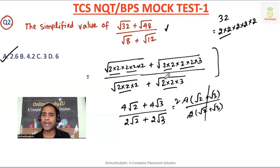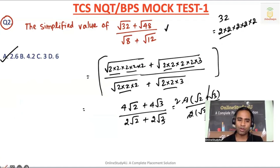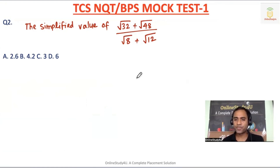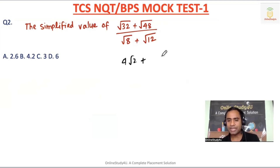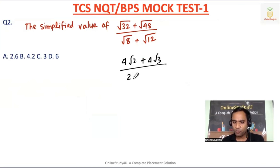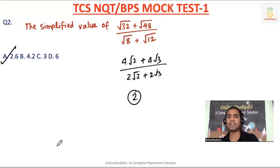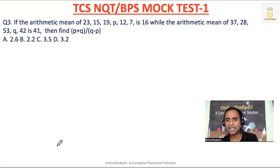You don't have to write all those steps. You will ask, sir, you are only taking one or two minutes — how will we do it in the examination? For this kind of problem, once you understand: 32 is 16×2 so √32=4√2; 48 is 16×3 so √48=4√3; 8 is 4×2 so √8=2√2; 12 is 4×3 so √12=2√3. Then 4 out and 2 out — so 2 is the correct answer. That is all.